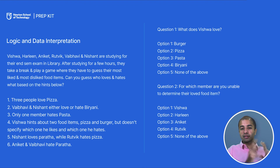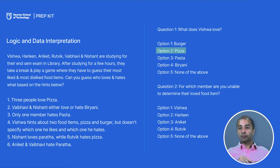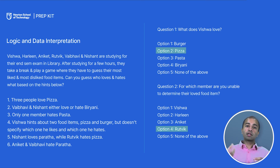We are now able to give structure to this problem and derive who hates what and who loves what based on the hints. Question one: what does Vishwa love? As we can see, Vishwa loves pizza — option two is correct. Question two: for which member are you unable to determine the loved food item? That is Rutvik — we cannot determine what food item he loves. Similar questions can be expected in the actual NSAT exam. Other question types may involve graphs about GDP, sales, or student data. Real-world scenario-based questions will be similar to what we did in this video.